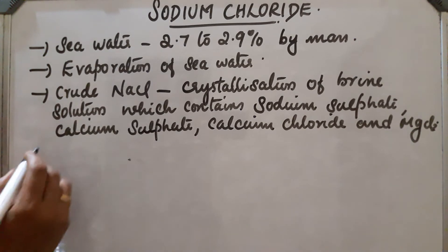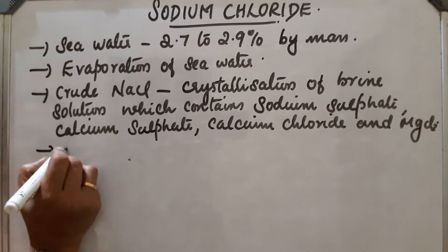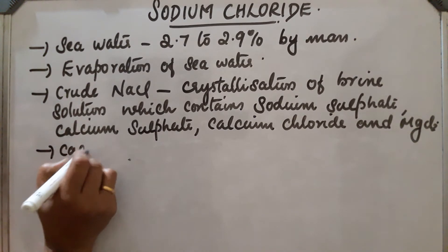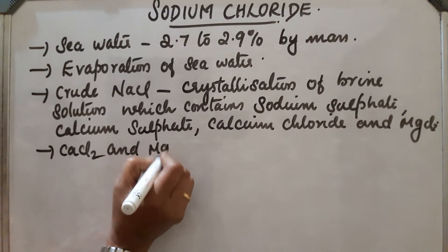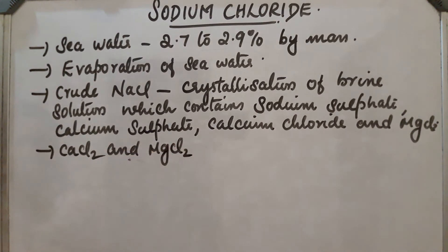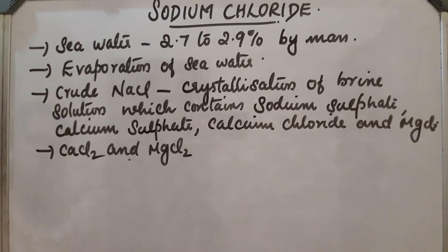CaCl₂ and MgCl₂ — that is, calcium chloride and magnesium chloride — make this solution deliquescent because they absorb moisture from the atmosphere. So the presence of calcium chloride and magnesium chloride makes this solution deliquescent.